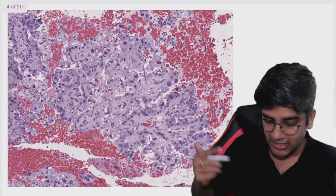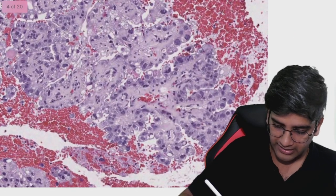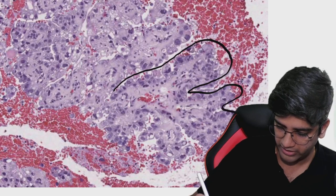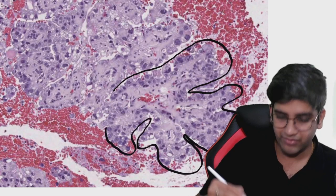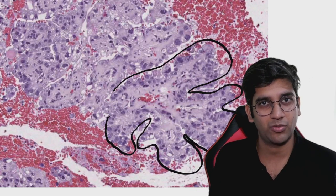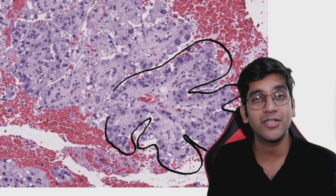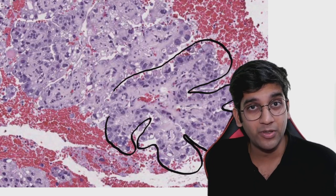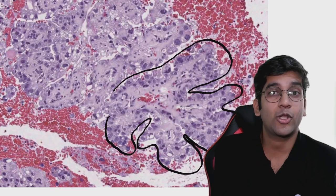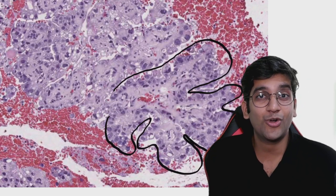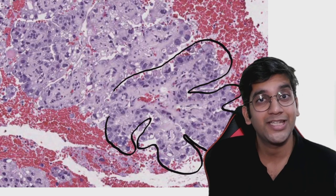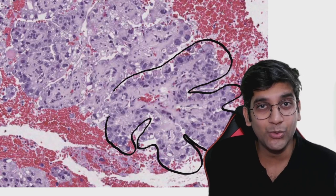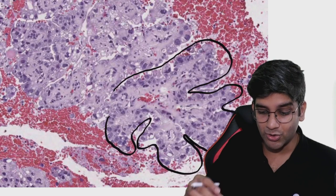Looking at this higher power image, I can definitely say I'm having papillary fronds here. Now, as I told you previously, whenever you see papillary, please don't jump into a serious carcinoma diagnosis, because papillary can be seen in multiple places — including papillary syncytial metaplasia, papillary proliferative endometrium, endometrial hyperplasia, and villoglandular adenocarcinoma. However, when you have papillary with grade 3 nuclei, think of a serous tumor. Let's look at the nuclei here.